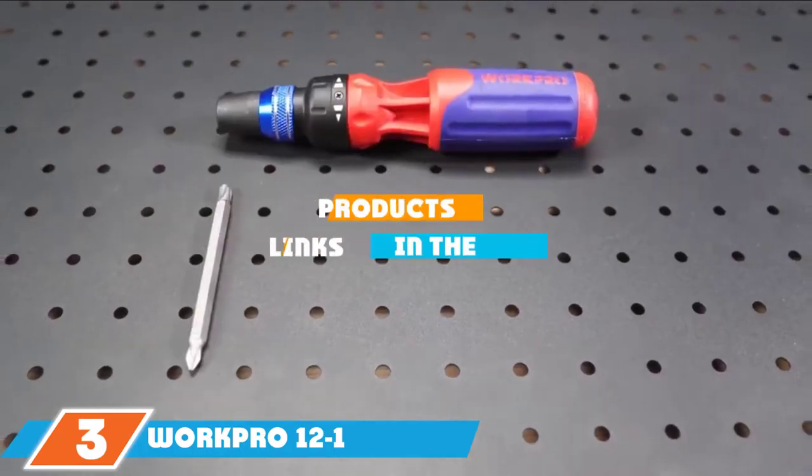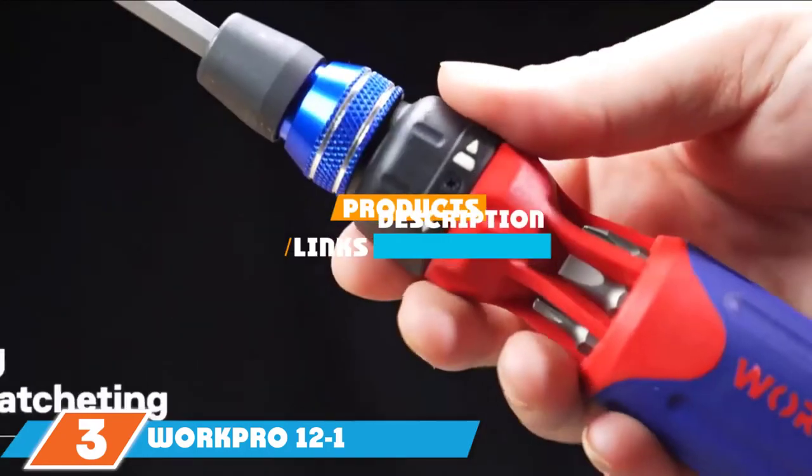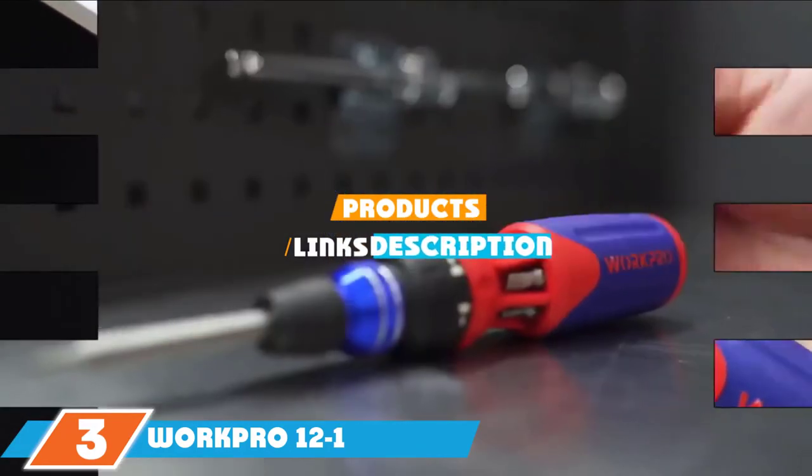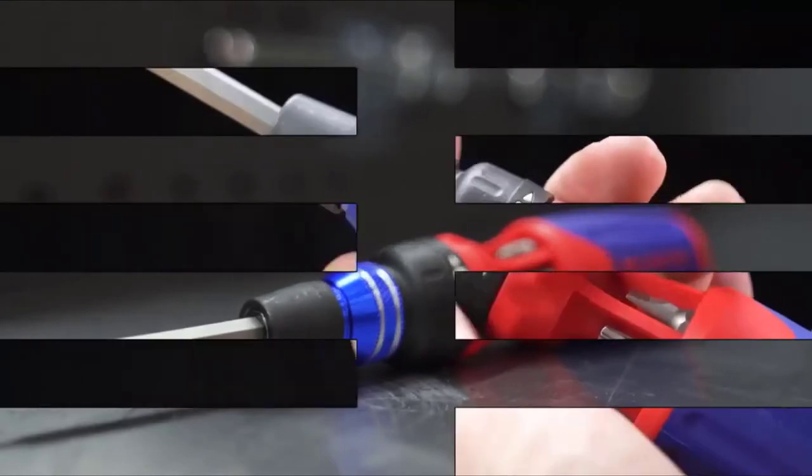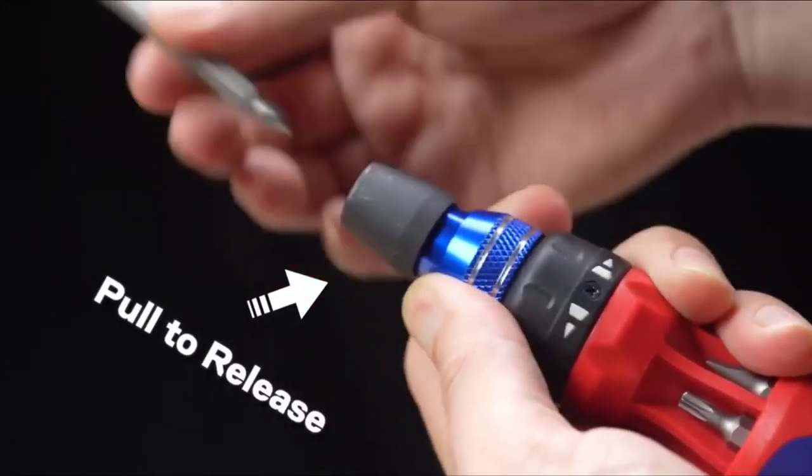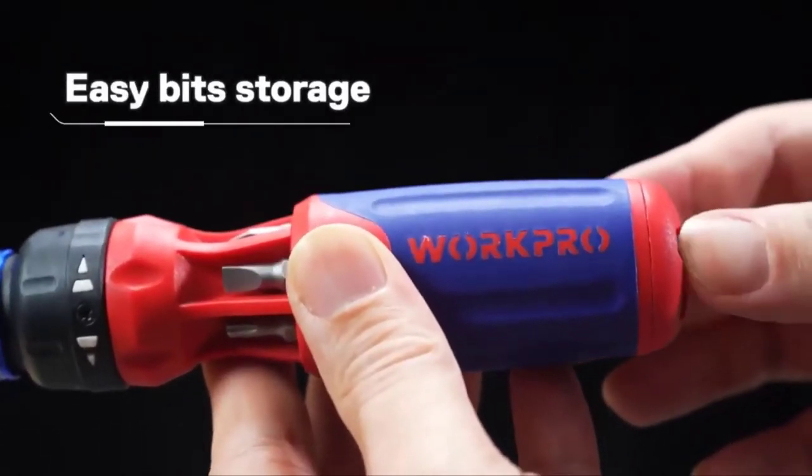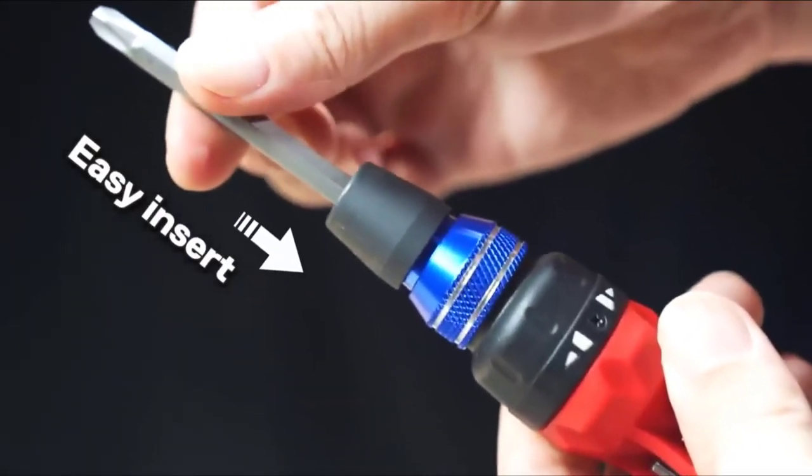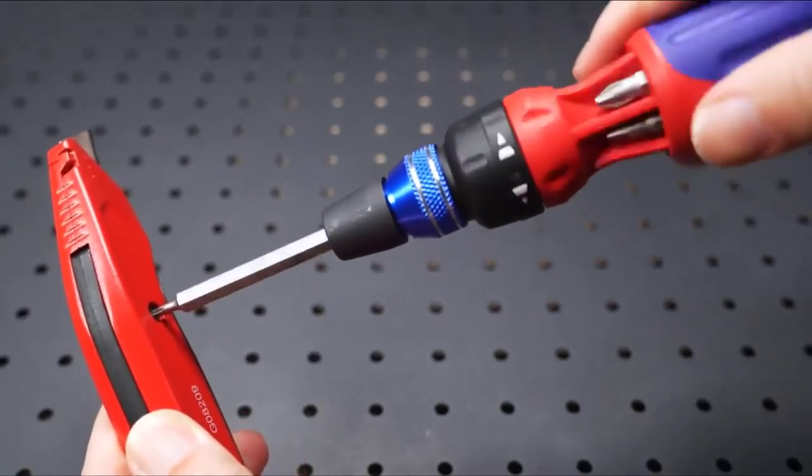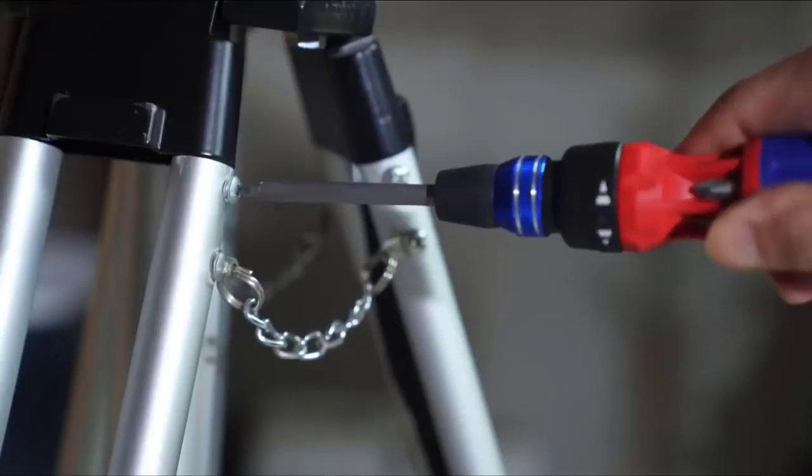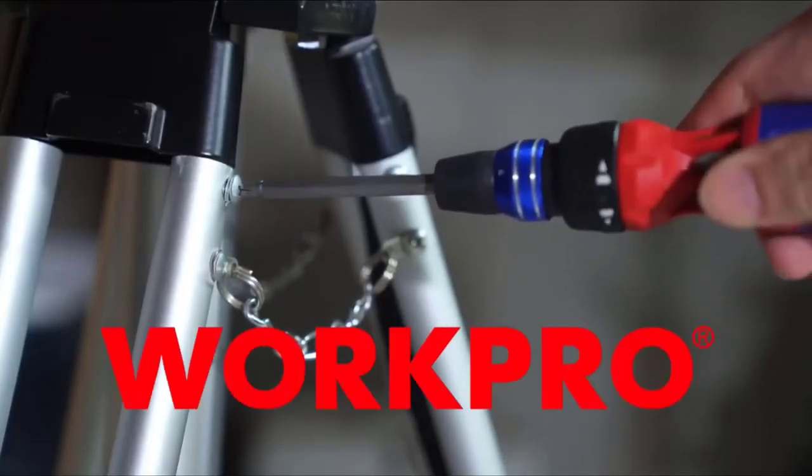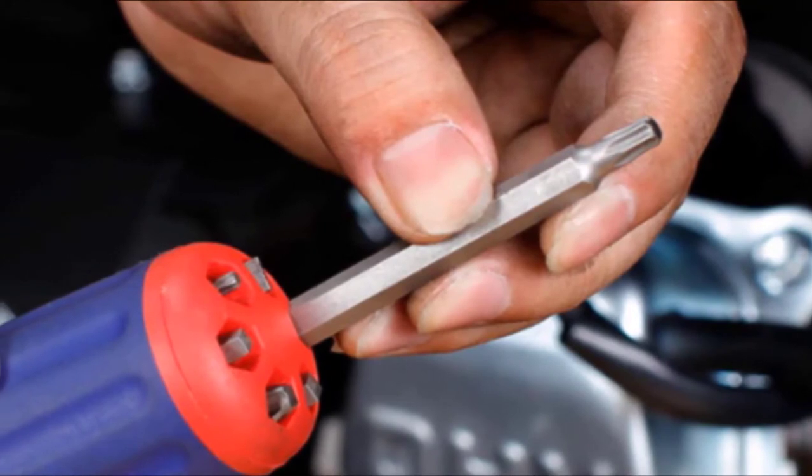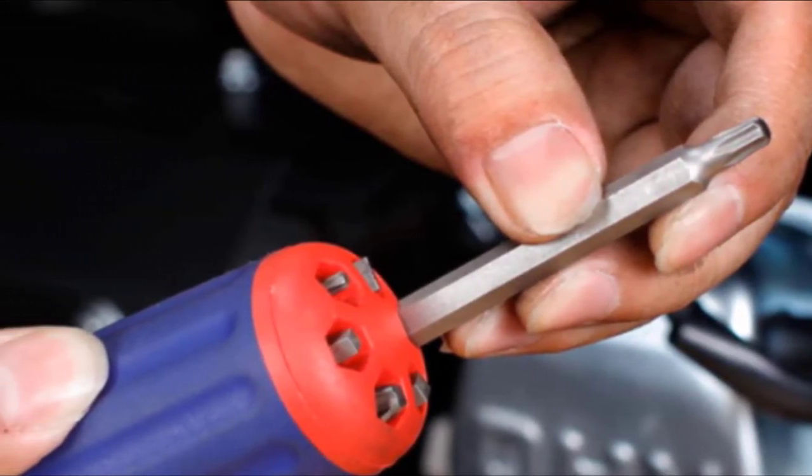The number 3 position is held by WorkPro 12-in-1 Ratcheting Screwdriver. The screwdriver features a patented quick-load auto-lock mechanism that allows one-handed bit loading. This ratcheting screwdriver also has a convenient switch for fast reverse and forward ratcheting. 12 different bits addresses many turning requirements. The shank is quarter-inch and the bits are double-ended. Bits store in the handle, which is ergonomically designed for comfort and control.